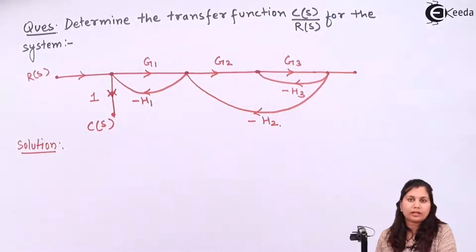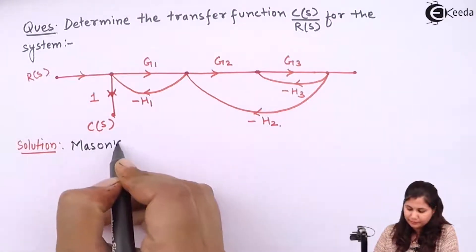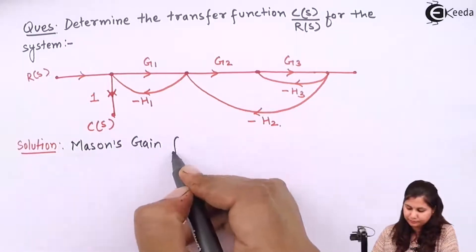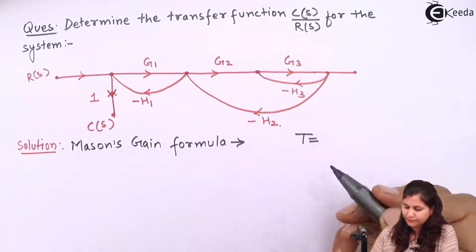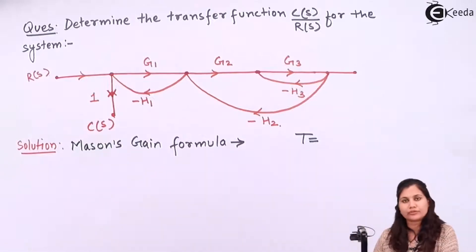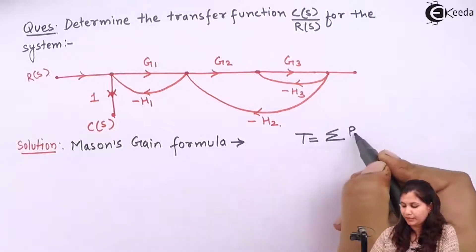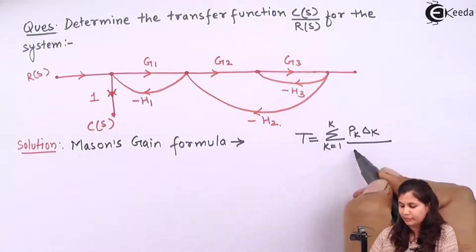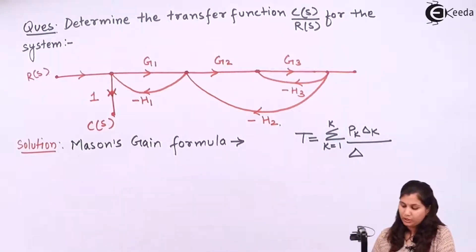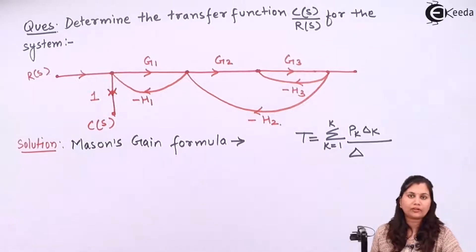To find out the transfer function from a signal flow graph we will use Mason's gain formula. This formula states that the transfer function of a system is given by the summation of P_k · Δ_k, where k is from 1 to K, divided by Δ. With the help of this Mason's gain formula we can find out the transfer function of the system.